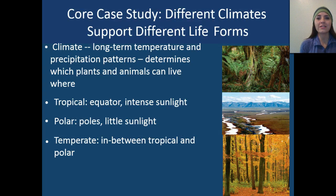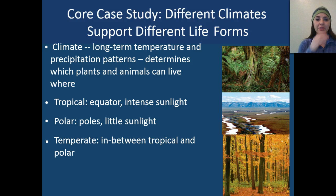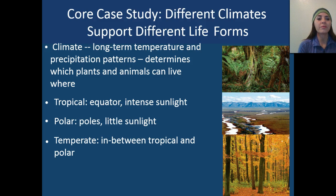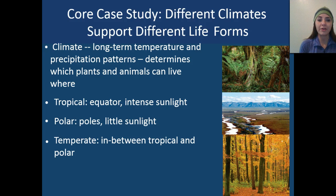The core case study in this unit is that different climates support different types of life forms. Climate is the long-term temperature and precipitation patterns, and this is what determines which plants and animals can live where on Earth. We have tropical areas — very close to the equator — that get intense sunlight, which is where you see all of your rainforests and the largest amount of biodiversity.